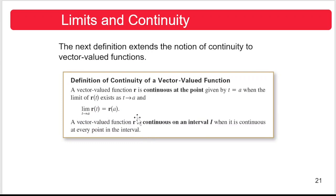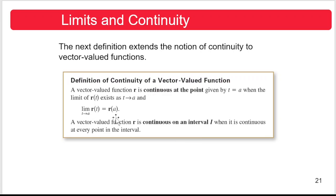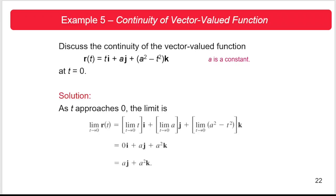Our next definition is the continuity of a vector-valued function. A vector-valued function r is said to be continuous at the point given by t = a when the limit of r(t) exists as t approaches a, and the limit of r(t) as t approaches a equals the value of the vector-valued function at a. A vector-valued function r is continuous on an interval I when it is continuous at every point in the interval. To show continuity, we must show that the limit of r(t) as t approaches a equals r(a).